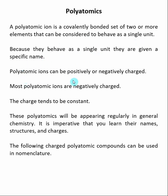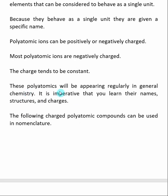These polyatomic ions can be positively or negatively charged. However, most polyatomic ions are negatively charged. The charge on these polyatomics tends to be constant. So when we look at a list of them, the polyatomics will have a defined charge and that will not vary. These polyatomics will be appearing regularly during general chemistry, and it is imperative that you learn their names, structures, and charges.